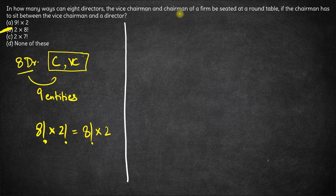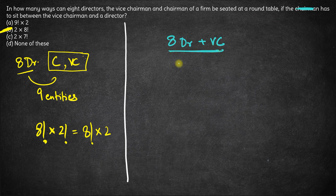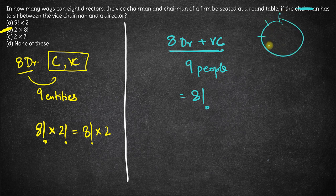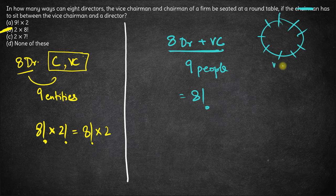The other way of doing this question: let's forget about the chairman for the time being and consider the 8 directors plus the vice chairman. We have a total of 9 people. These 9 people can be seated around a circle in 8 factorial ways. Let's say one of them is the vice chairman and all the others are directors.